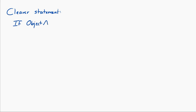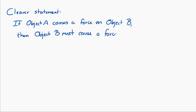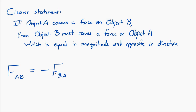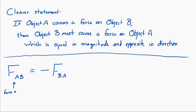Perhaps a clearer way of stating Newton's third law is: if object A causes a force on object B, then object B must cause a force on object A that is equal in magnitude and opposite in direction. In mathematical form: F_AB = -F_BA, where F_AB is the force of A acting on B, and F_BA is the force of B acting on A. The equal magnitude is indicated by the equation, and the negative sign tells us they are in opposite directions.